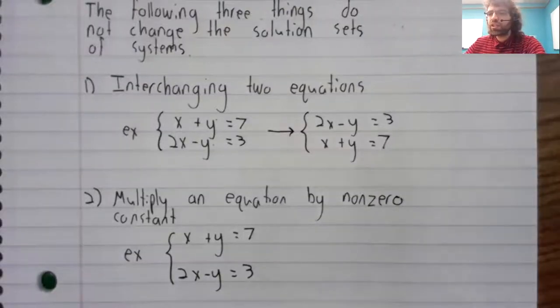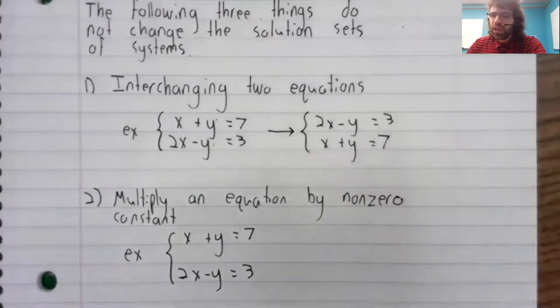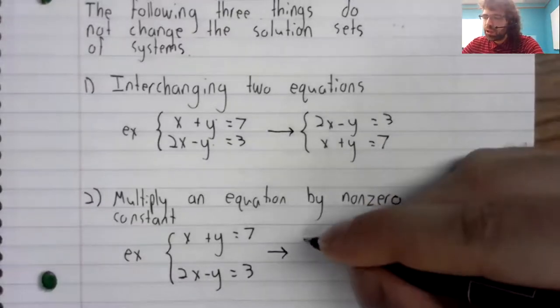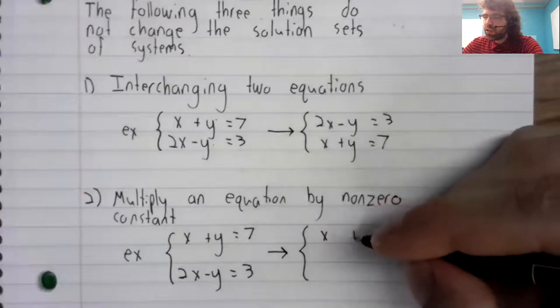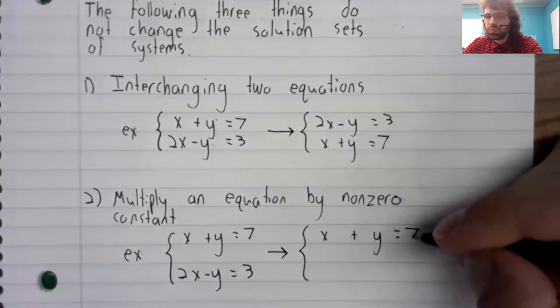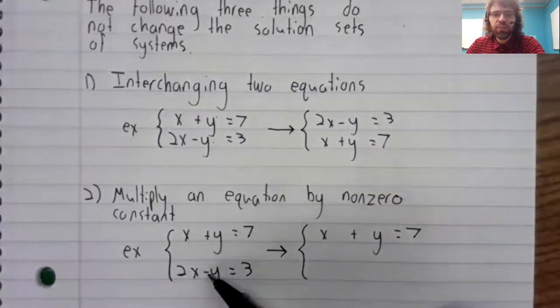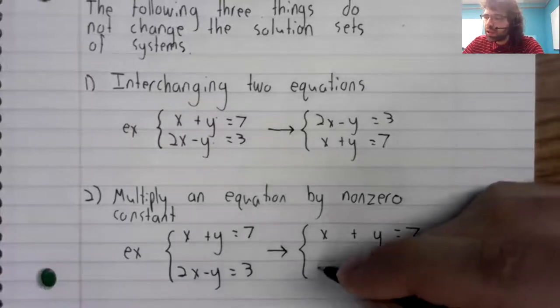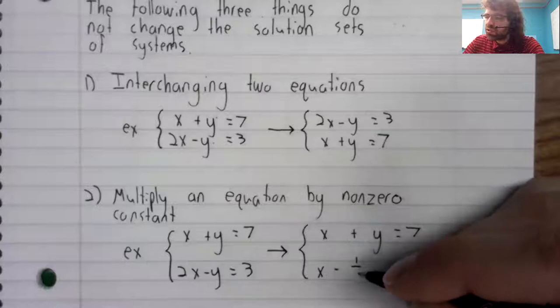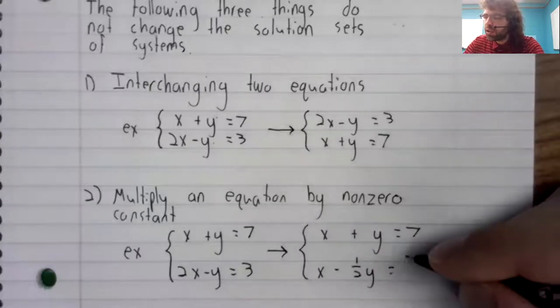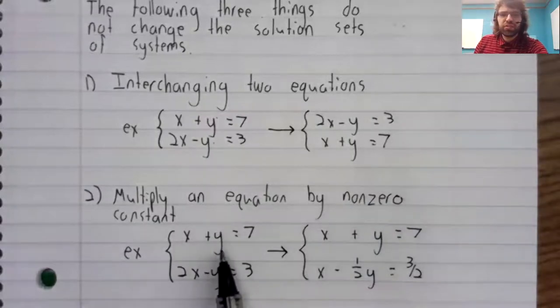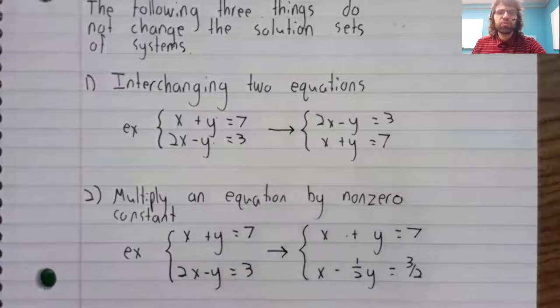If we're once again working with this system and we decide we don't like this two, we'd rather have a one here. Then, leaving the first equation alone, we can take the second equation and multiply both sides by one half: half x minus one half y equals three halves. These systems have the same solution set.